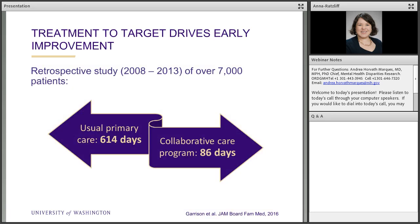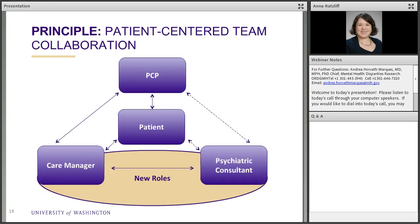Data from the Mayo Clinic showed that when they delivered collaborative care to over 7,000 patients, patients with collaborative care improved in about 86 days compared to almost two years for patients without collaborative care. It's not that patients don't get better from their depression — it just takes a long time without systematic support. You can imagine for a patient at risk for suicide, it makes a big difference to get them better in 90 days versus almost two years.